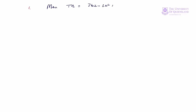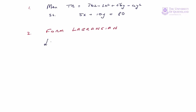The first step is to state the problem mathematically: maximise total revenue equals 36x minus 3x² plus 56y minus 4y², subject to 5x plus 10y equals 80. Step two is to form the Lagrangian: the objective function minus lambda times the constraint, which is g(x,y) minus c, that is 5x plus 10y minus 80.